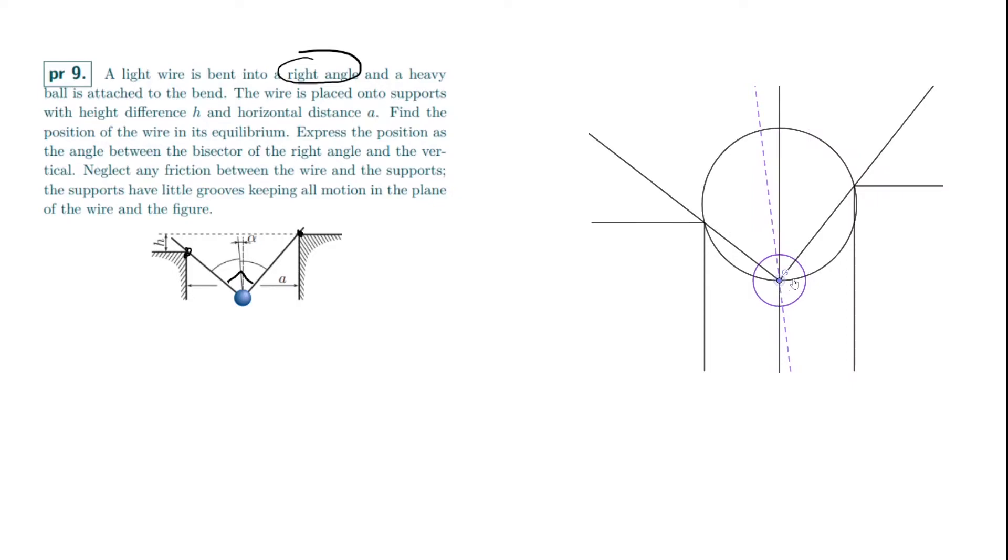And from that, what we can do is actually try to orient this so that this becomes the diameter here. This becomes the diameter of the circle. And if it becomes the diameter of the circle, it's actually quite easy. I'm going to get rid of the diagram now so you can actually work on it.